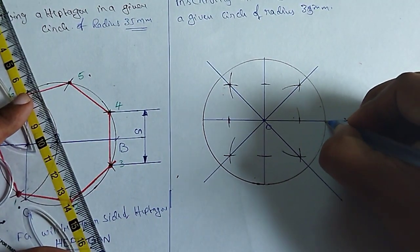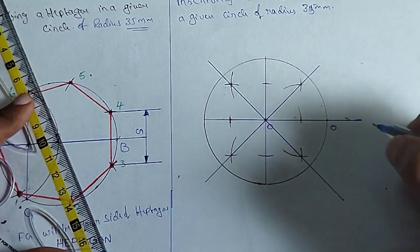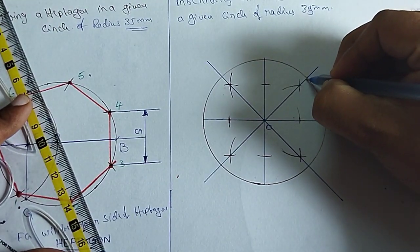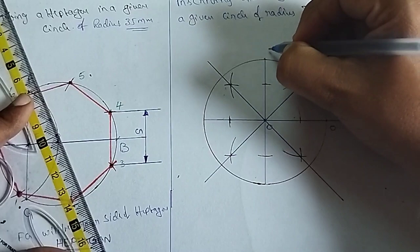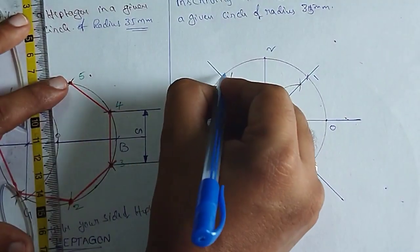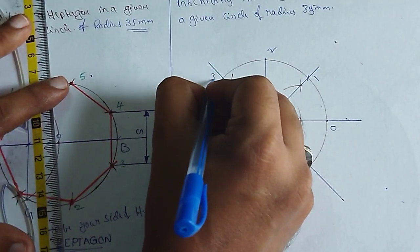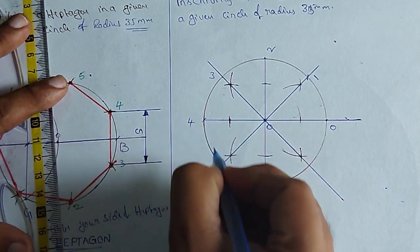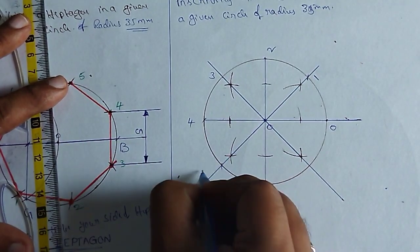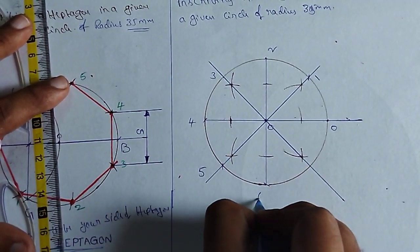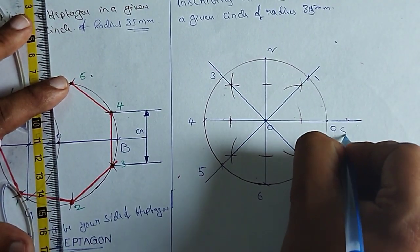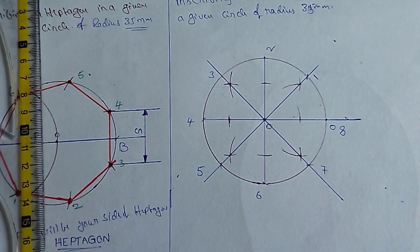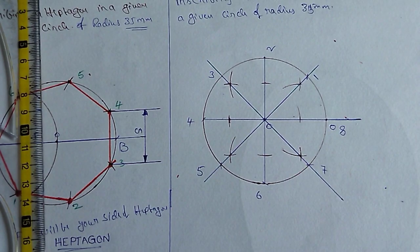This is the 0th cutting point, this is 1st, this is 2nd, this is 3rd, this is 4th, this is 5th, 6th, 7th — and the 0th one is also the 8th one. So total 8 number of parts are in this circle — we have 8 number of points.